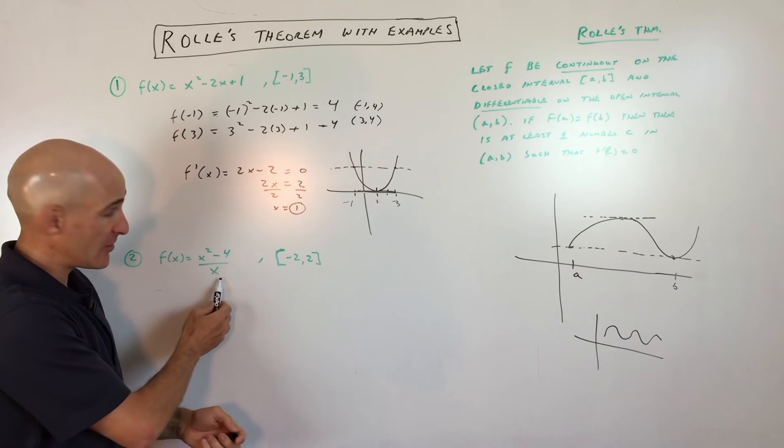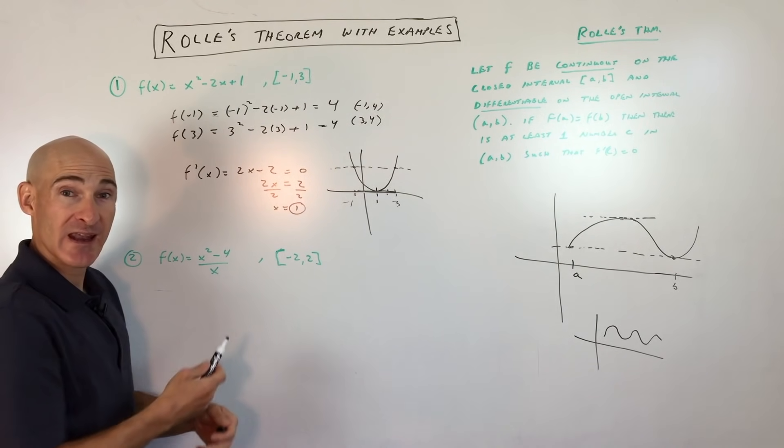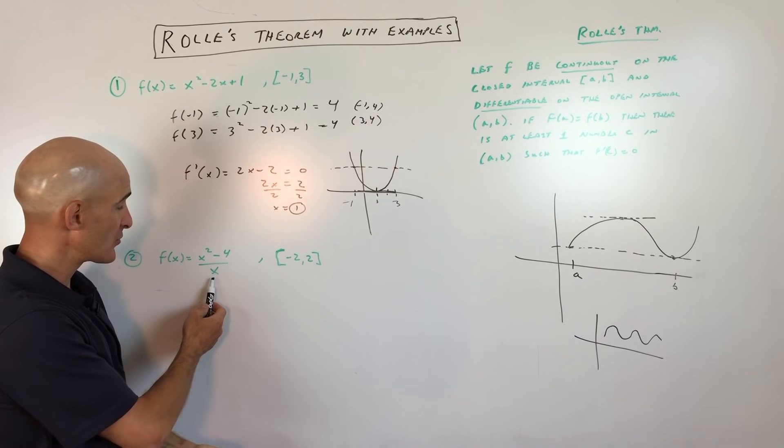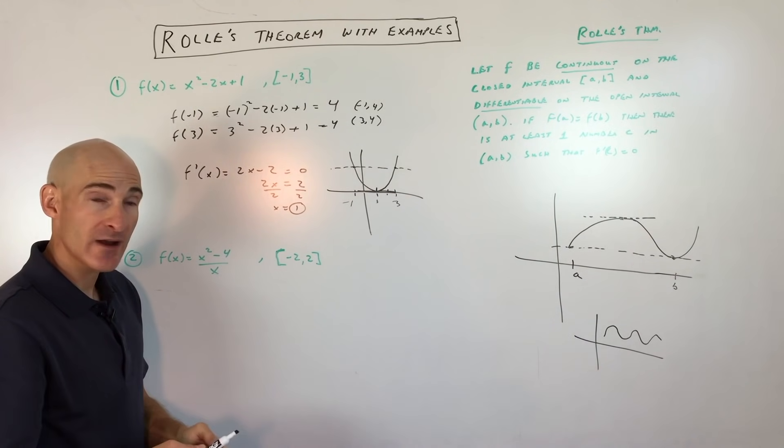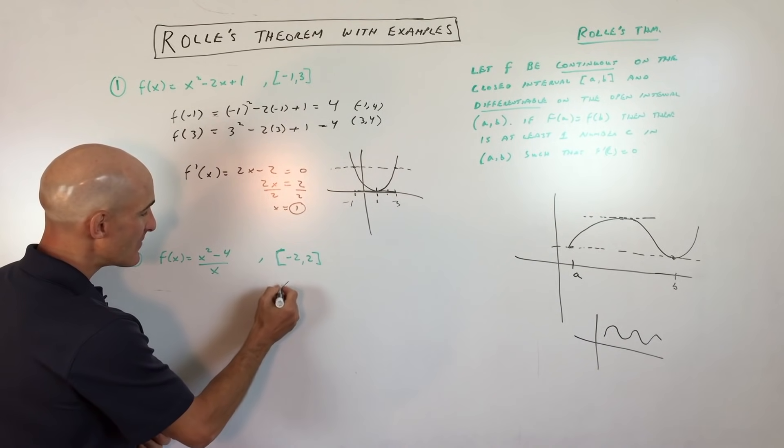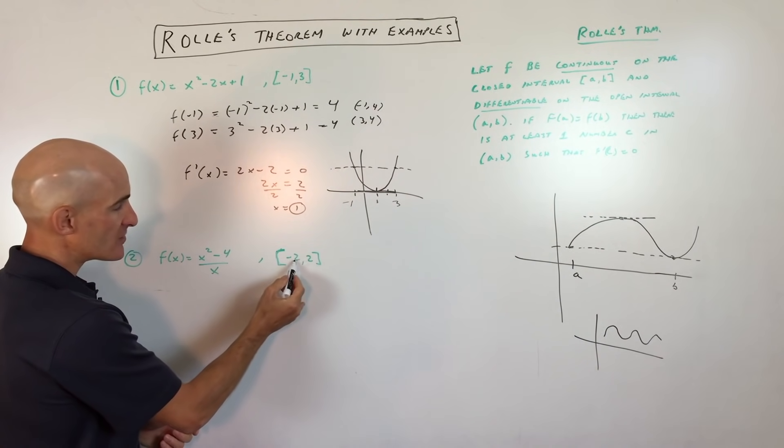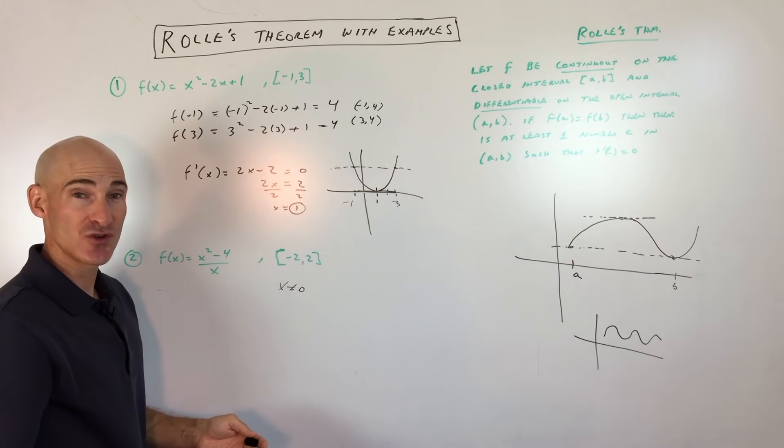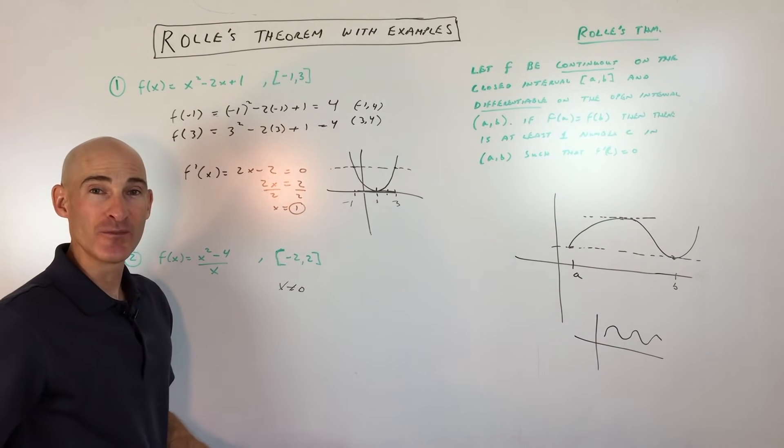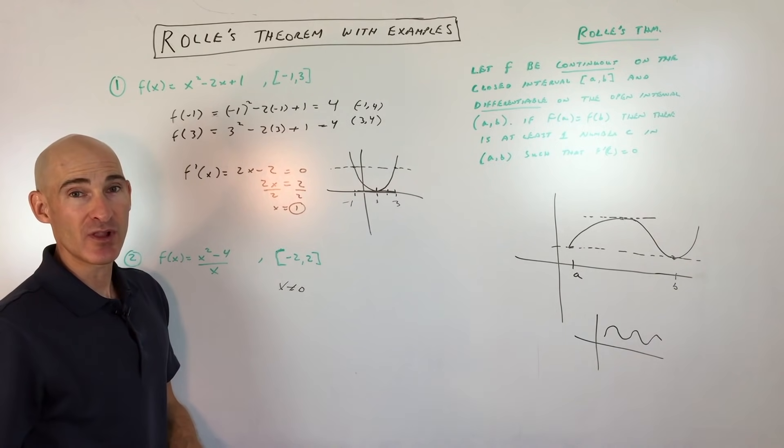And we know the denominator can't equal 0 because if it equals 0, this is going to be undefined. In this particular graph, we're going to have a vertical asymptote at x equals 0. So that means that x cannot equal 0. 0 is in between negative 2 and 2. So this graph is not continuous on this interval, which means that Rolle's theorem does not apply.